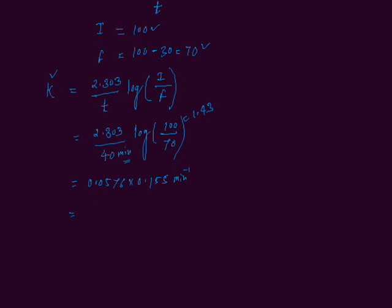You can multiply both numbers and you will get 0.0089. It is 8.9 per minute. We write this number in scientific notation — we move the decimal after 8.9. Since we move the decimal to the right side after 3 digits, we get 8.9 × 10 to the power minus 3 per minute. This is the rate constant of the reaction.